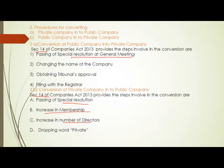Now moving to the conversion of a private company into a public company — Section 14 of the Companies Act 2013 also applies here. The first step is passing of a special resolution, and here also the alteration of articles happens. Then the second step is increase in membership — in a private company the minimum number of members is two, but it has to increase to seven for a public limited company. Third step is increase in the number of directors — a private company has two directors, but a public company requires three.